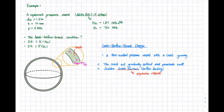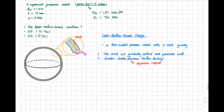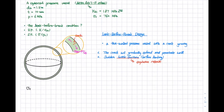Let's find these values. We know the internal pressure P, the inner diameter, and the thickness, so we can calculate the tensile stress. Sigma_T equals PR over 2T. P is 6 MPa, R is 1.5 meters over 2, which is 750 millimeters, and 2T equals 2 times 10 millimeters. The result is 225 MPa.